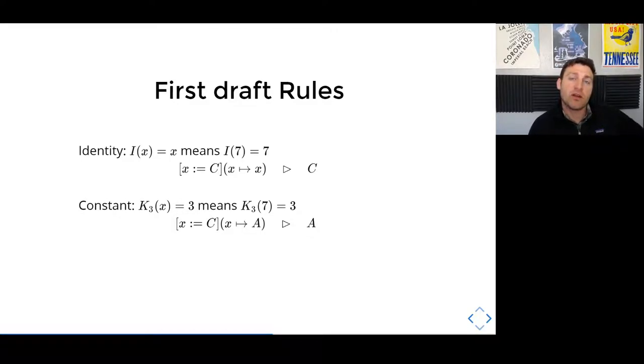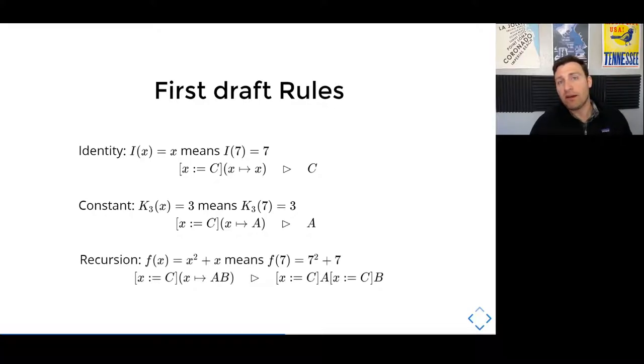Constant functions are another natural example. If we have a constant that always outputs 3, then it doesn't matter what input we give. We should give the same number back. And again, in symbols, this doesn't need a name like K. It simply needs to know that X is assigned a constant A, and that when we assign a C to X, it doesn't affect the A.